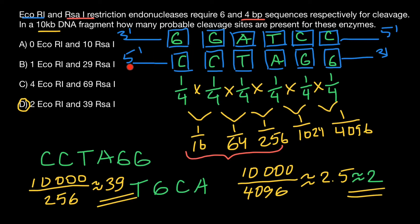Reading 5-prime: C, C, T, A, G, G — this is the same sequence as we originally see on the other strand of the DNA. This is what we call a palindromic sequence.